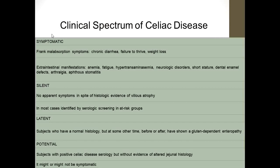Symptomatic celiac disease, as already discussed, includes frank malabsorption symptoms: chronic diarrhea, failure to thrive, weight loss, extra-intestinal manifestations, anemia, fatigue, increased liver enzymes, neurological disorders, short stature, dental enamel defects, arthralgia, arthritis, and dermatitis.